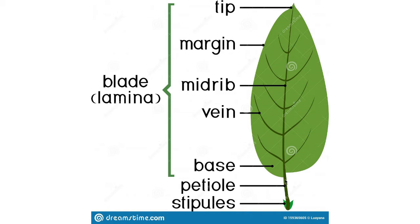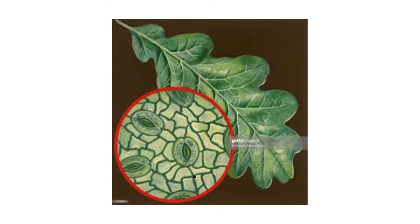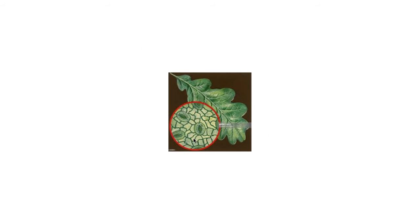The base of the leaf joining it with the stem is called the petiole. Each leaf contains a few openings on the lower surface which are called stomata. Stomata help in the exchange of gases — during photosynthesis, plants take in carbon dioxide which enters through the stomata, and they release oxygen which comes out through the stomata. During respiration, stomata help take in oxygen and release carbon dioxide.